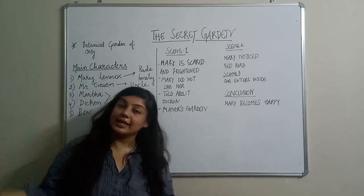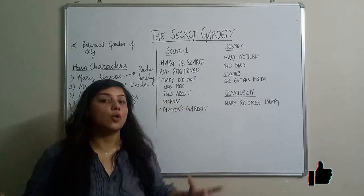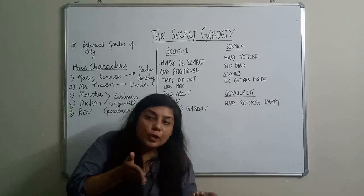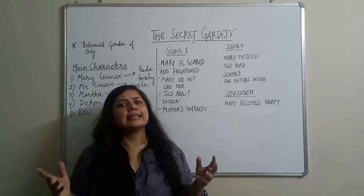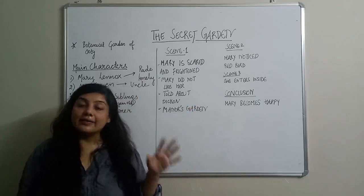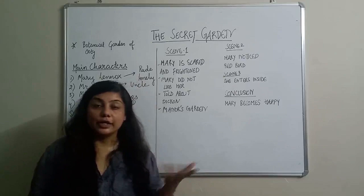When Martha started talking to Mary, she introduced herself and said she would be taking care of her. Then she introduced her brother Dickon, who has a very good nature. She said she would help Mary to meet her brother, and on the way they would find a garden called the Secret Garden. As soon as Mary heard the words 'secret garden,' she asked if there was really one. Martha confirmed there was, but said it was closed and Mary could not enter inside.